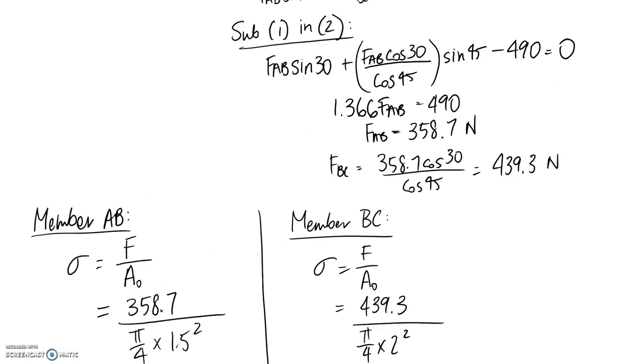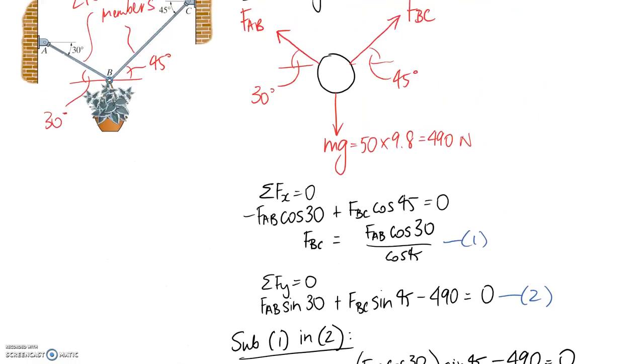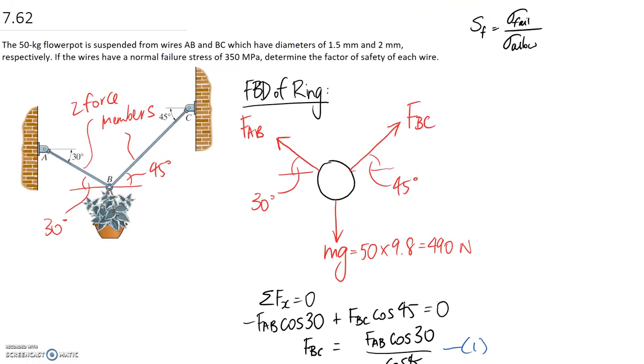So the final step is to convert this into a safety factor and we're given a little bit of information around this. So this is our equation for the safety factor and we're told that our normal failure stress is 350 megapascals. So we can just apply this equation.